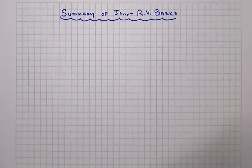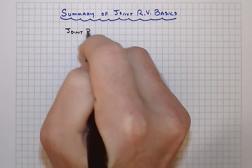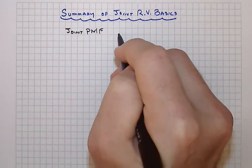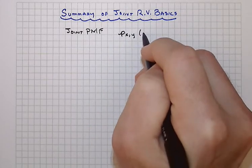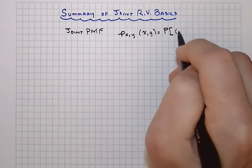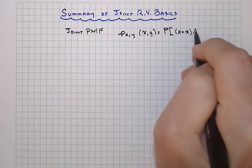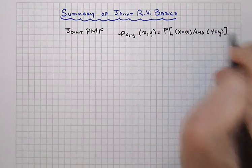Before we move on to covariance and correlation in our next lesson, let's summarize where we've been with these joint random variables and the basic distribution models, terms, and symbols we're using. We started off with a joint probability mass function, P sub XY of x and y, or two random variables of interest taking on two specific values: the probability that x equals one value and, as the intersection event, y equals another value.